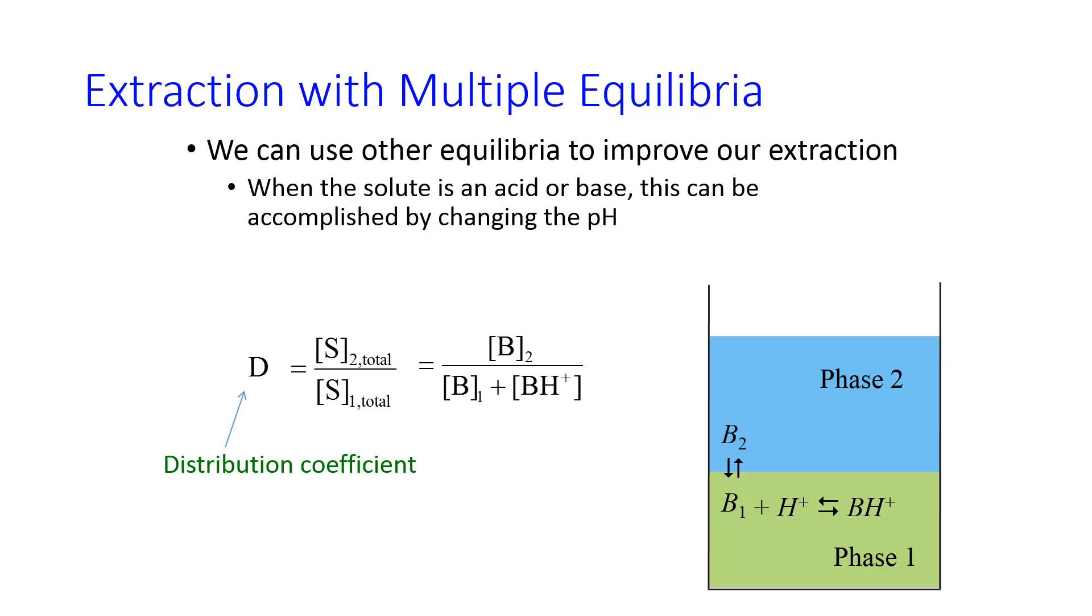An example where this happens is a weak base like an amine. The neutral form is soluble in organics and in water. The protonated forms are only water soluble. So in this case, phase 1 being water. The protonated form would not partition into phase 2, whereas the neutral form goes back and forth.